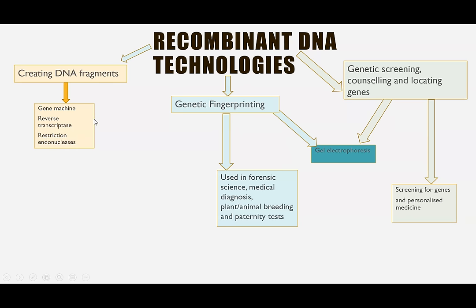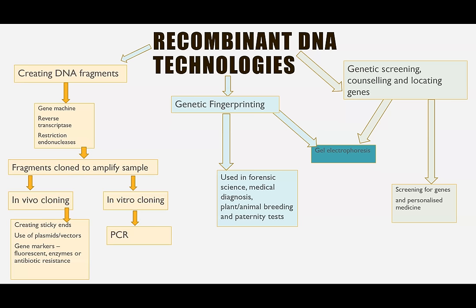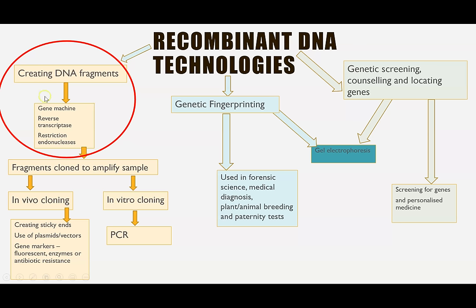What we're focusing on today is creating DNA fragments, and there are three mechanisms: the gene machine, reverse transcriptase, and restriction endonucleases. This links to the broader process — for genetic modification or engineering you must have the gene of interest, then clone that gene so you have lots of copies, and then insert it into the organism. For example with human insulin, you'd isolate the gene, amplify it, then insert it into a bacterial plasmid so the bacteria can produce the protein.